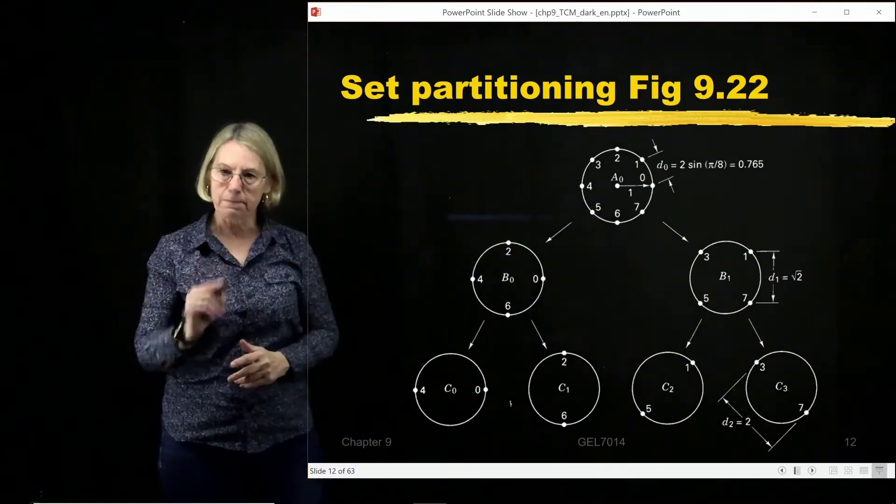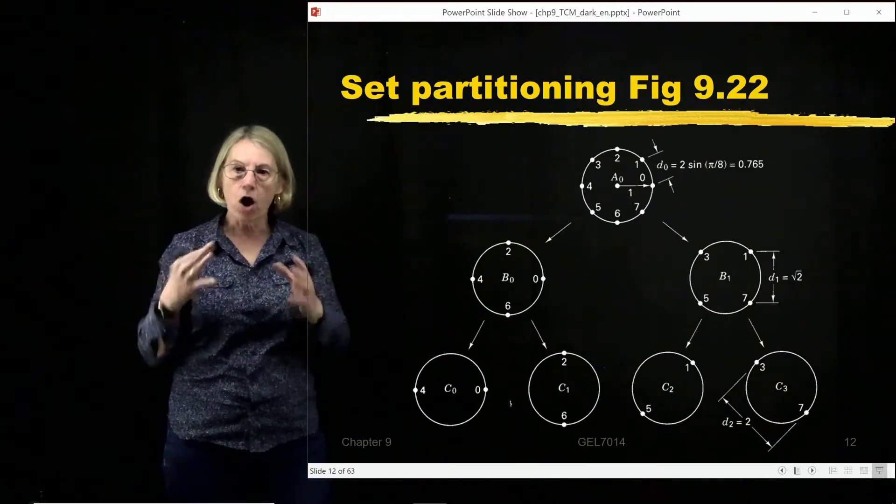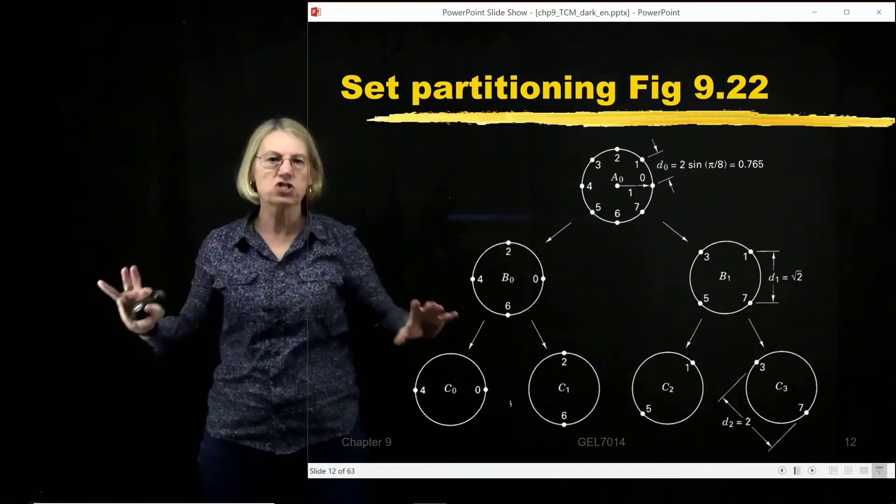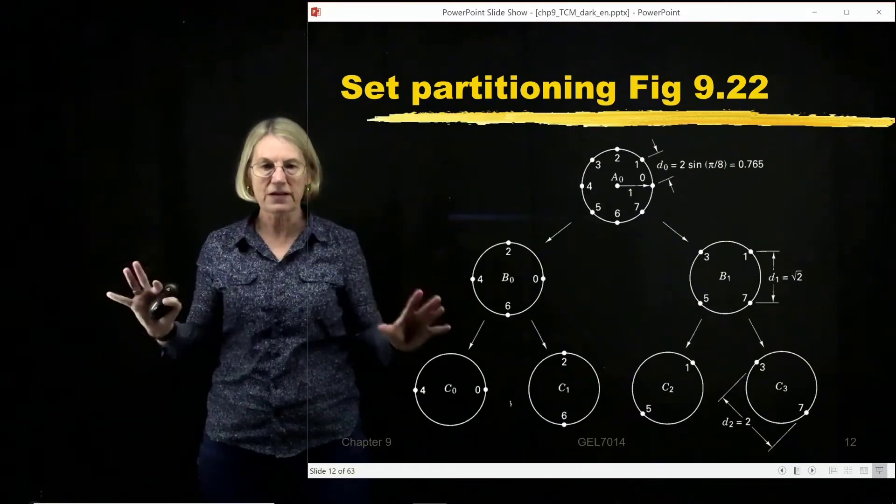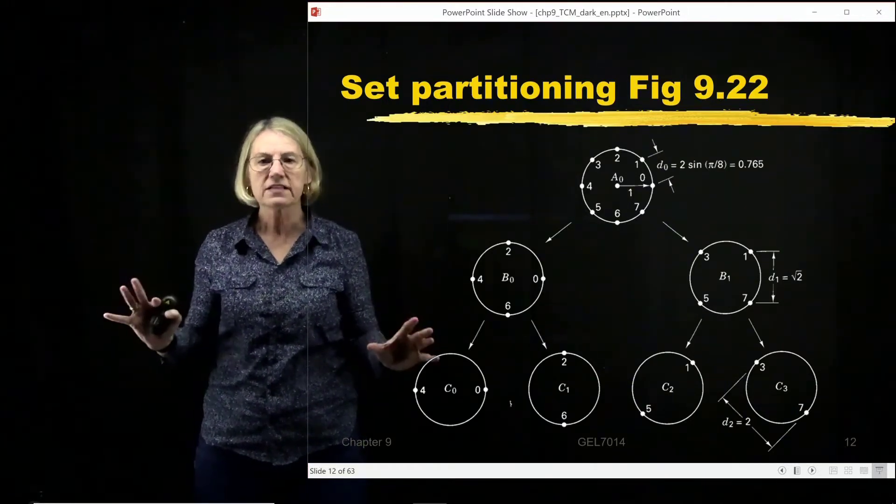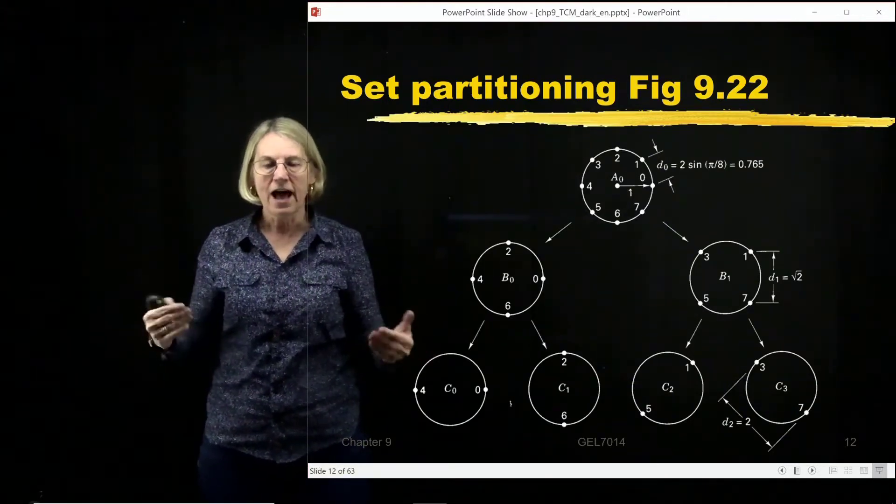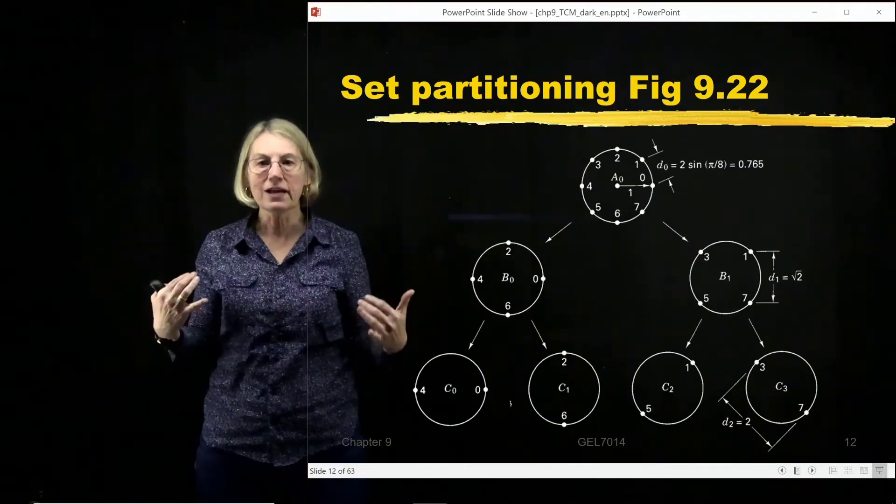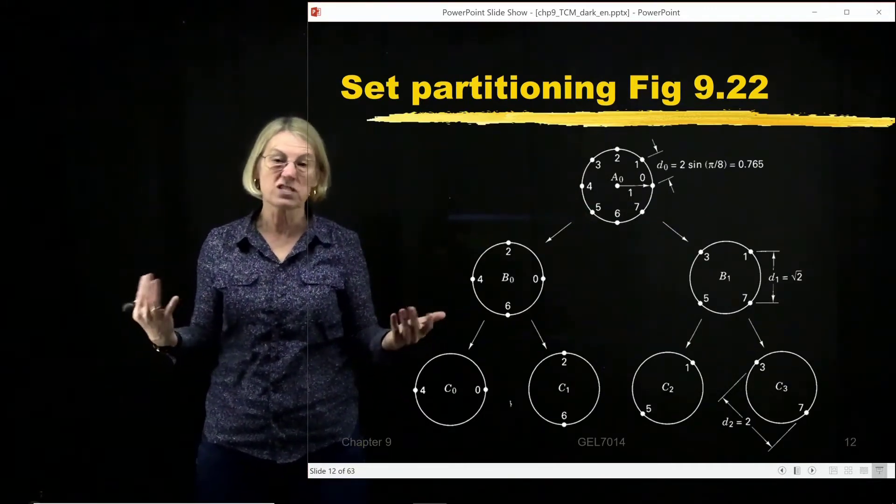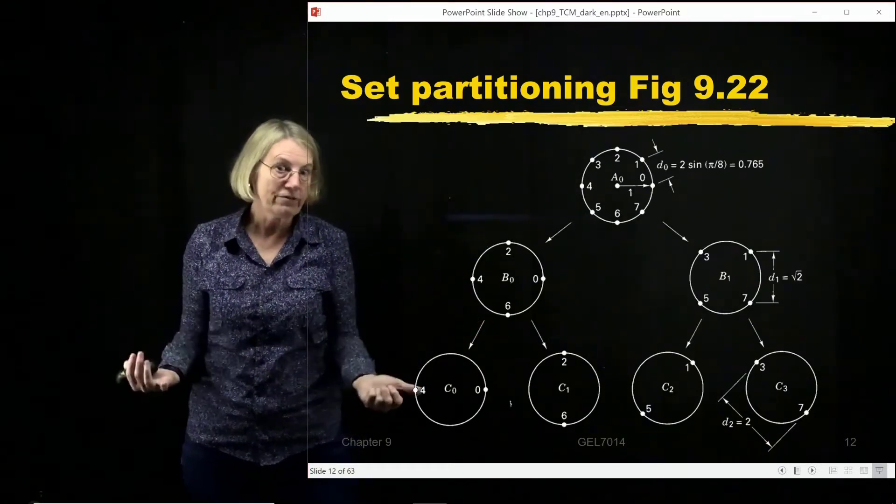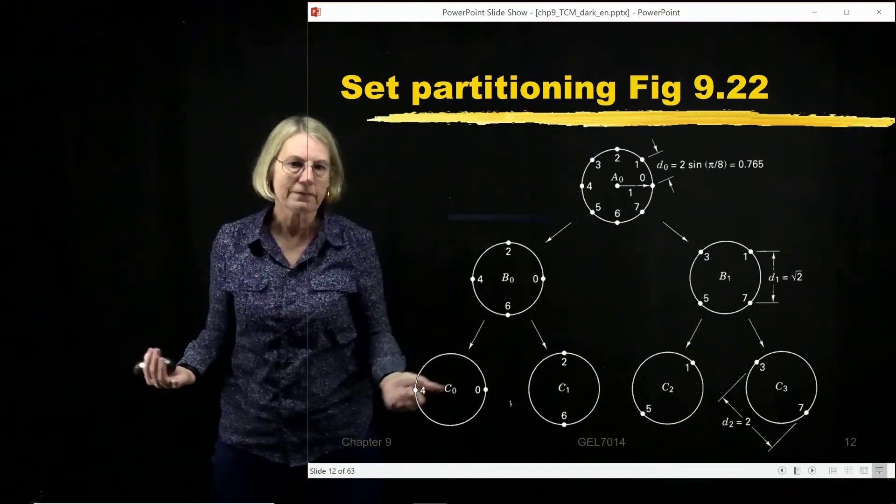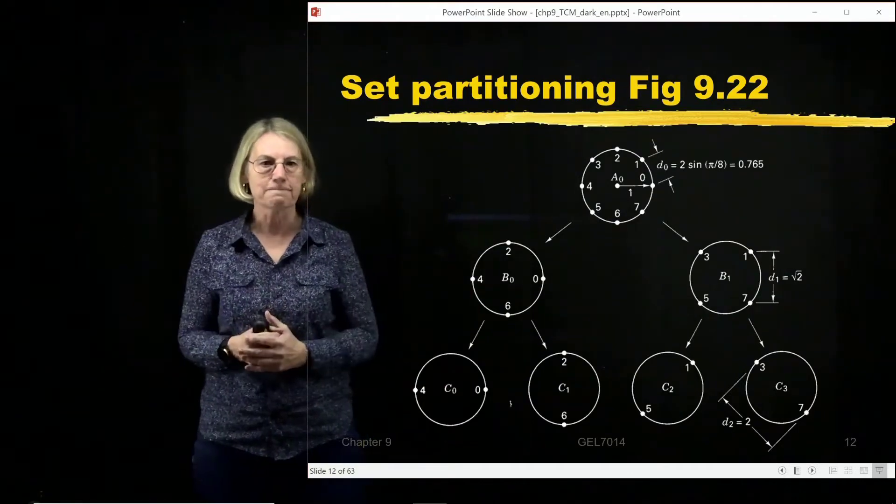The first step in set partitioning is to take all of the points and divide them into two subgroups. I'm separating the subgroups with the strategy that at each step I'm going to increase the separation. It's easy because I have fewer points, so they will be farther apart because there's fewer of them on the same space.